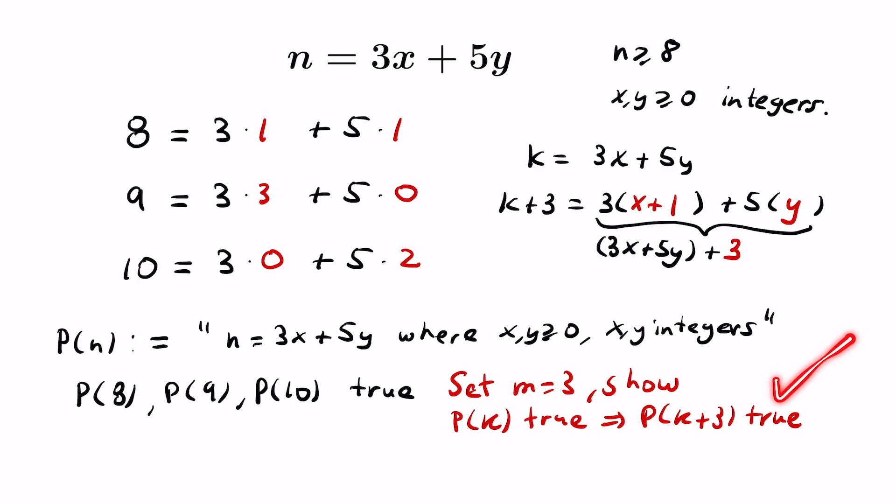So we do get this implication, and so by our non-standard induction, every positive integer n can be represented in this fashion where x and y are non-negative integers, as long as n is at least 8. This is an example of something called the chicken McNugget theorem or the postage stamp problem. We'll see more about that in a future video. Now let's look at a more complicated example of non-standard induction.